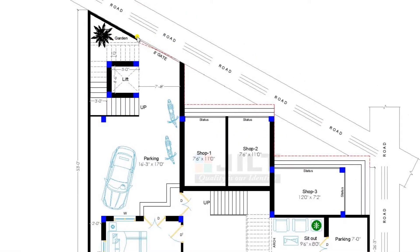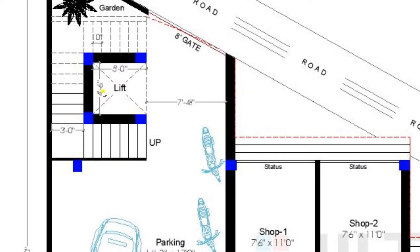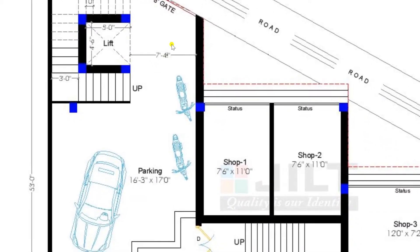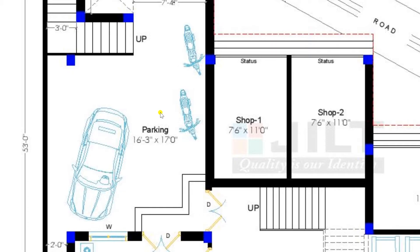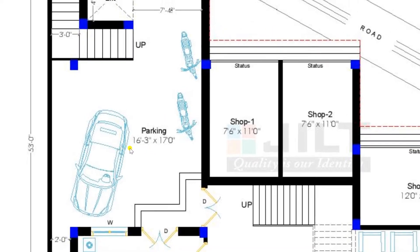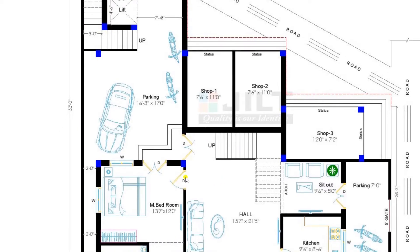Entering from the north direction, we have plotted an 8 feet gate. When you enter, there is a lobby of 7 feet 4 inches from which you can move towards the first floor. We have provided a duplex model from inside and from outside you can also move to the first floor, along with a lift of size 5 feet by 4 feet 6 inches. From this area you can also park a car along with motor vehicles — there is a lavish parking area of 16 feet 3 inches by 17 feet. This is the main entrance from the north direction.